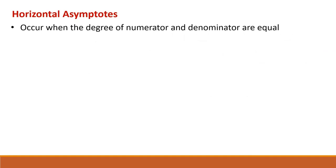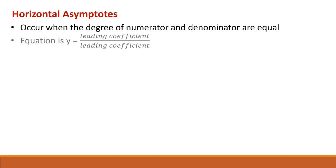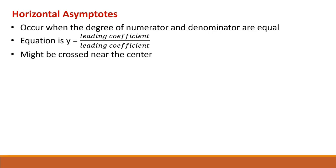Now let's think about horizontal asymptotes. Horizontal asymptotes will occur when the degree of the numerator and denominator are equal — in other words, when the highest exponent in the numerator and denominator are the same. To find the equation of that horizontal asymptote, we find the leading coefficients of the numerator and denominator, and then the horizontal asymptote is y equals the leading coefficient of the numerator divided by the leading coefficient of the denominator. Horizontal asymptotes might be crossed near the center of the graph, but they don't have to be.